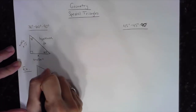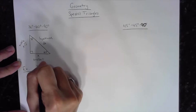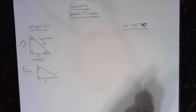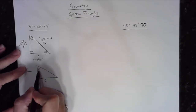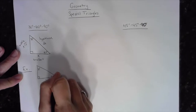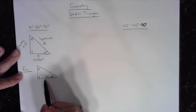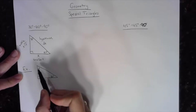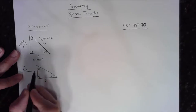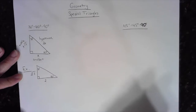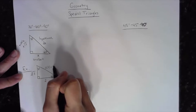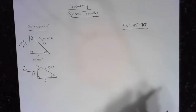For example, if I give you a right triangle with a 30-degree angle and the smallest side is 2, then automatically the third angle is 60 degrees. I know the side opposite the 30-degree angle, so the middle length opposite the 60-degree angle is 2 times the square root of 3, and the hypotenuse is double the smallest side, which is 4.